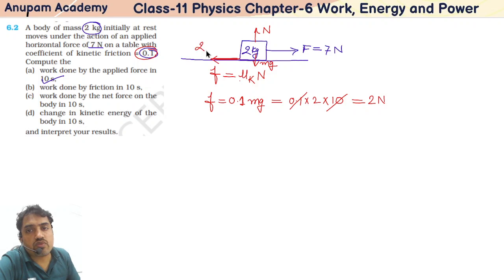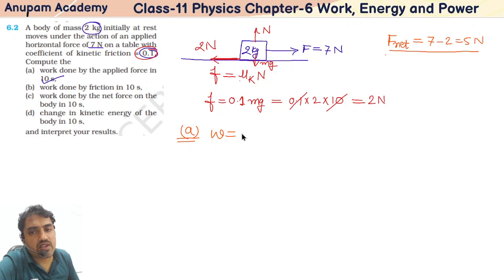This 2 Newton force is acting in backward direction. So what is the net force? The net force is equal to 7 minus 2, that is 5 Newton. We can find the acceleration because in this first part A, work done by the applied force in 10 seconds.